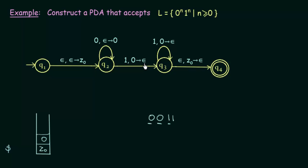Nothing is pushed (epsilon), and we've reached the end of the string. The next symbol is empty, so we check if Z0 is the topmost element on the stack — yes it is. If Z0 is on top, we don't push anything and we reach the final state Q4. Since we reach final state Q4, this string is accepted. This is how we design a PDA that accepts strings where the number of zeros equals the number of ones.